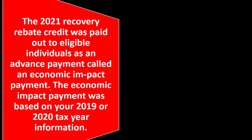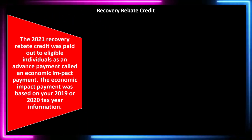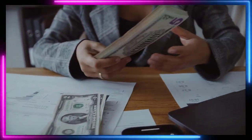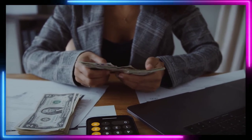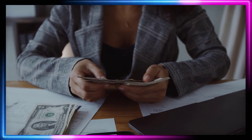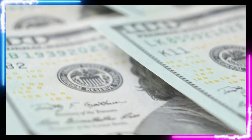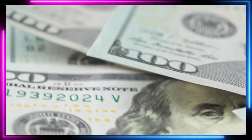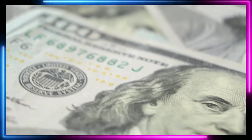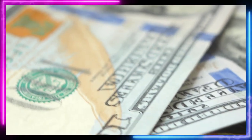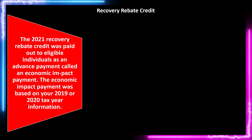The economic impact payment was based on your 2019 or 2020 tax year information. That means it's a prepayment based on an estimate, because 2021 taxes are based on information you give to the IRS in 2021, which you don't really have until you report taxes by around April 15th or April 18th. If they're going to give a prepayment for tax year 2021, they have to base it on the 2020 return if available, or the 2019 return, or any other information they have to send out the economic impact payments.